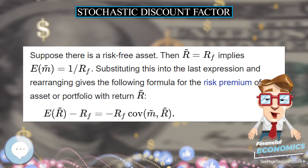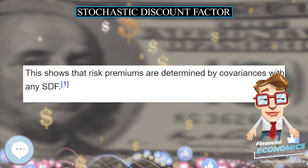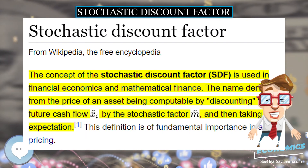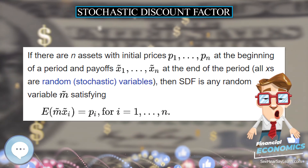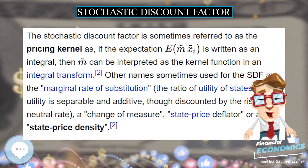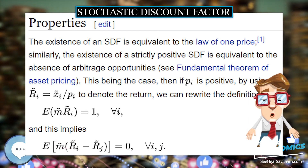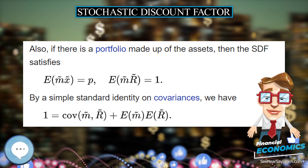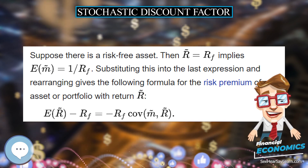Suppose there is a risk-free asset. Then R = R_F implies E[M] = 1 / R_F. Substituting this into the last expression and rearranging gives the following formula for the risk premium of any asset or portfolio with return R. This shows that risk premiums are determined by covariances with any SDF.